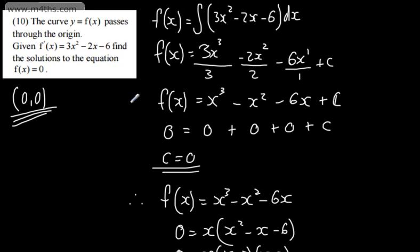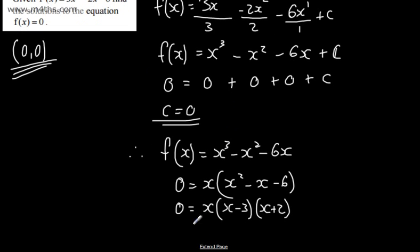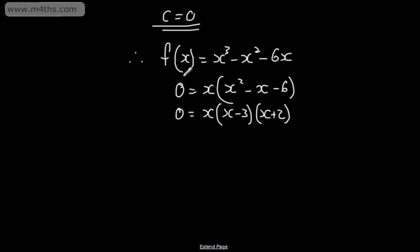So with our integral here, the integration part was quite nice. Fairly straightforward, nice and easy. But then we have a kick to this that we need to find the solutions to this equation. This is a cubic function here. And we were told it went through the origin. But we can see from here now in factored form that this is going to give x is equal to 0, x is equal to 3, or x is equal to negative 2. I'll put them in ascending order. And they are the solutions.